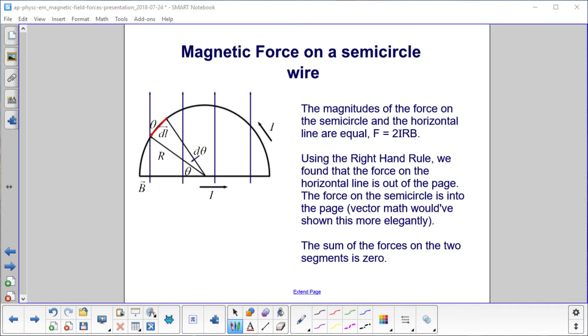We find that the magnitudes of the force on the semicircle, this piece here, and the horizontal line are exactly equal, 2IRB.